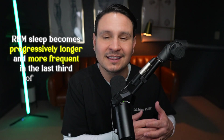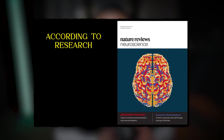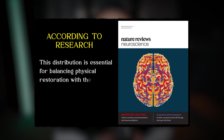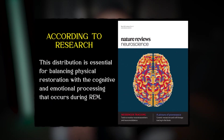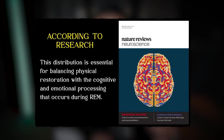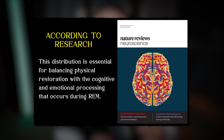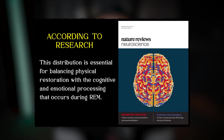REM sleep becomes progressively longer and more frequent in the last third of the night. Studies in Nature Reviews Neuroscience show that this distribution is essential for balancing physical restoration with the cognitive and emotional processing that occurs during REM sleep.